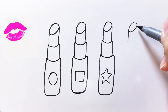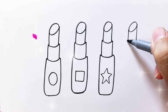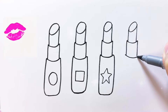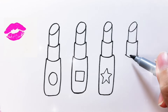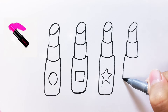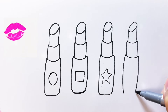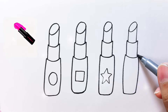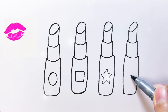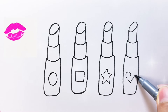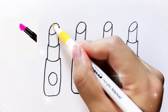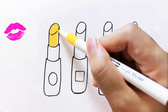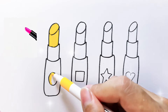A, B, C, D, E, F, G, H, I, J, K, L, M, N, O, P, Q, R, S, T, U, V, W, X, Y, and Z. Now I know my ABCs, next time won't you sing with me?